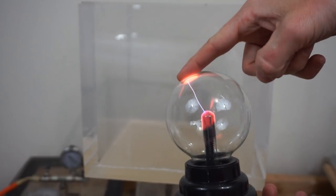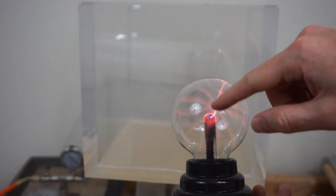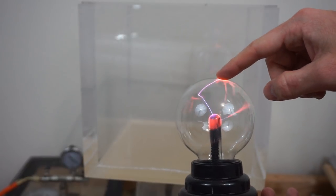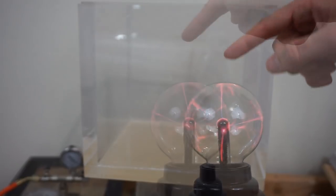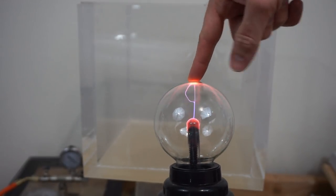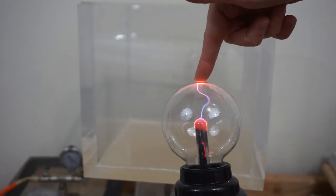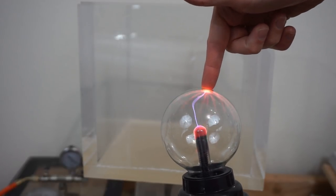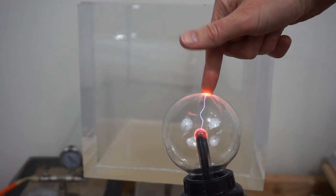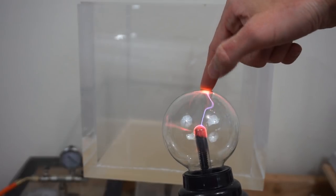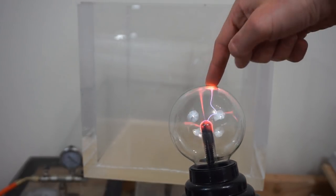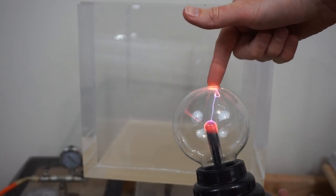So in the sphere here is some noble gas, and at the center there is an alternating current going to very high voltages. So when you bring your finger near it, because your finger can be more easily polarized than the surrounding air, it creates a path for the electric current to flow with the least resistance from the center of the globe to your finger.